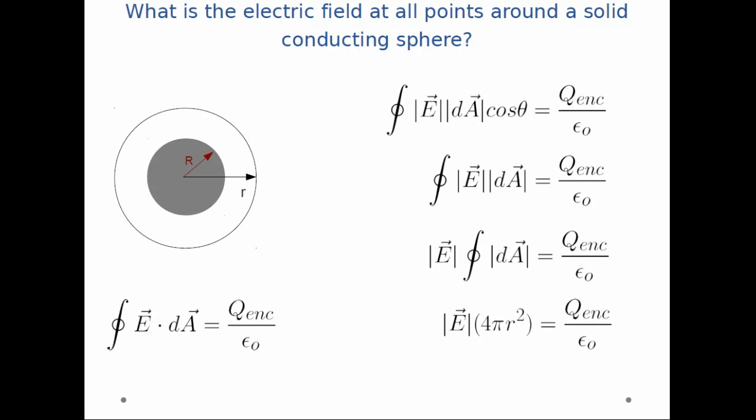And finally, I can sum up all the tiny pieces dA, and I get 4 pi r squared, the surface area of my spherical Gaussian surface.